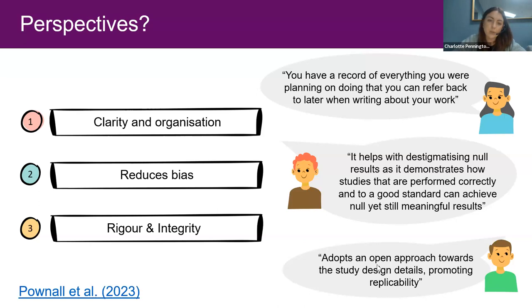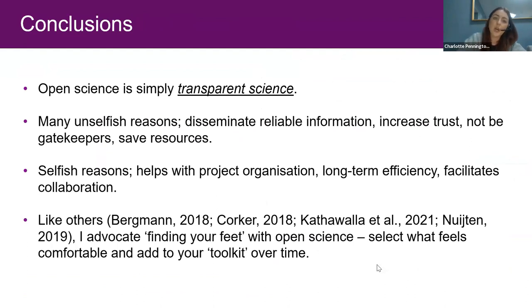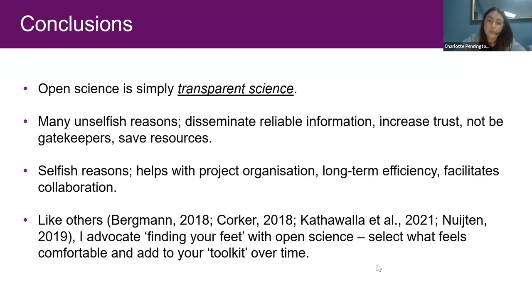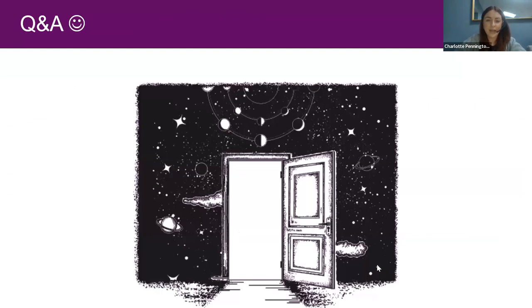To conclude: open science is simply transparent science. There are many unselfish reasons — disseminating reliable information, increasing trust, not being gatekeepers, and saving resources. The selfish reasons include helping with project organization, long-term efficiency, and facilitating collaboration. Like others, I advocate for a 'finding your feet' approach — selecting what feels comfortable for you and adding these practices and behaviors to your toolkit over time. There are resources available and I'm happy to take any questions.